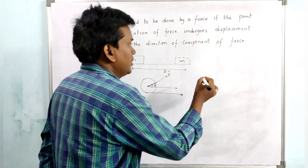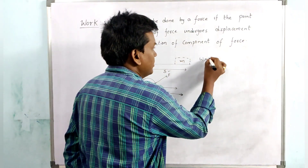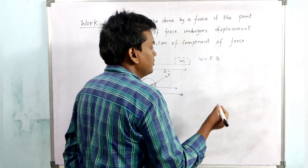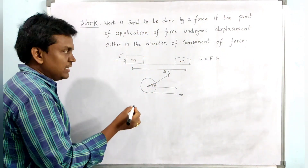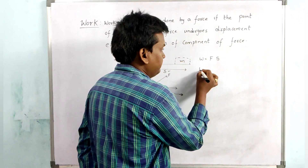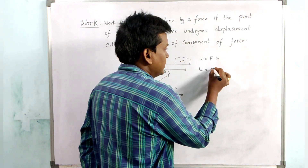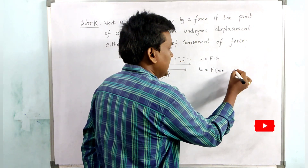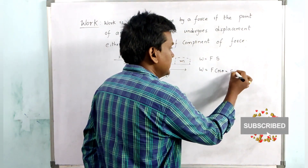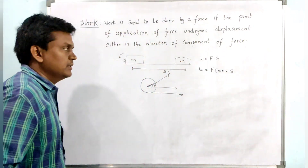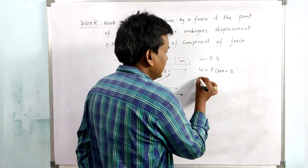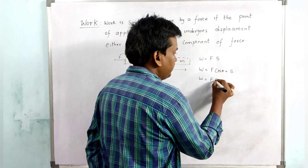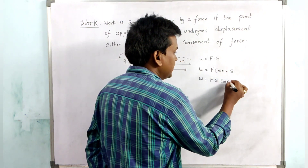Work done W equals force times displacement — there should be application of force and there should be displacement. Considering the component of force, the work done will be F cos theta multiplied by displacement. So we can write: W = Fs cos theta.